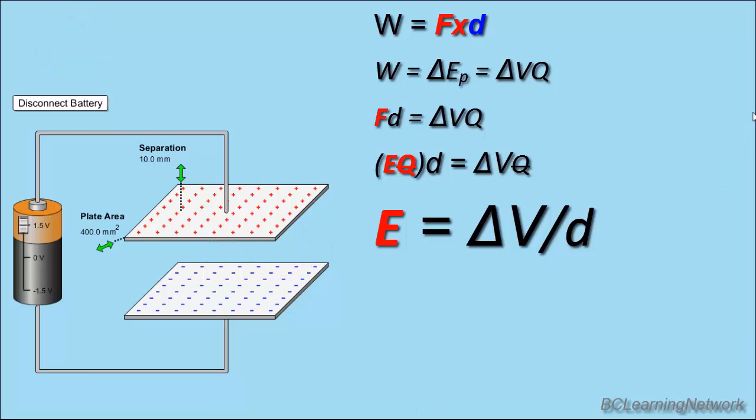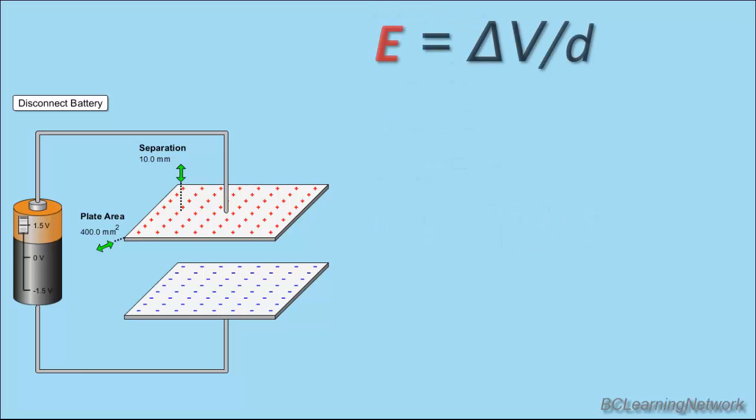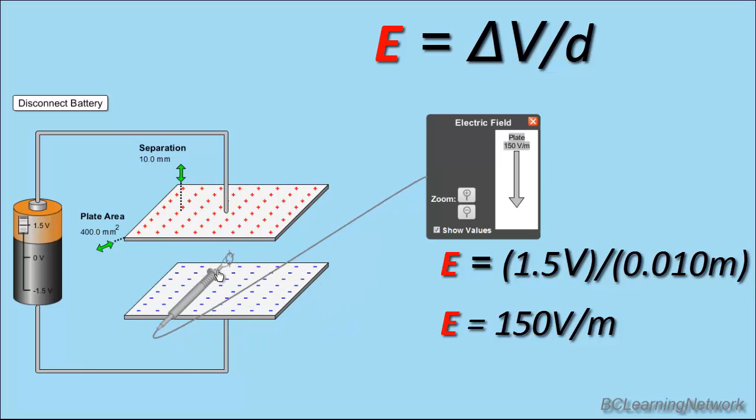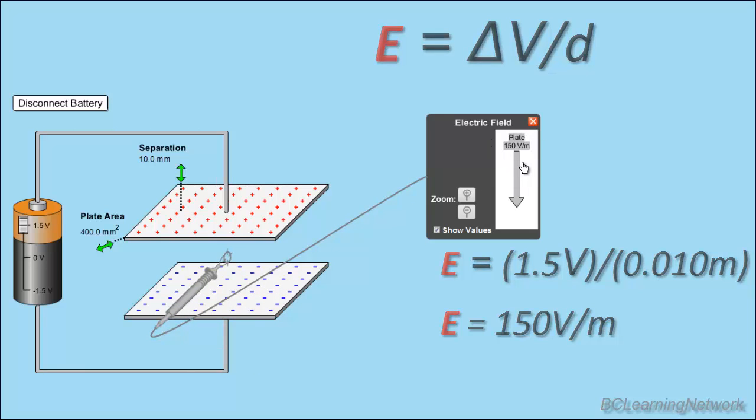Let's quickly check our equation with our simulation. If I grab my electric field detector, right now it's reading zero, and I place it in between the plates, what value would we expect? Well, the electric field is change in voltage, which is 1.5 volts from top to bottom, divided by separation. Now, the separation should be in meters, so it's 10 millimeters, which is 0.01 meters. 1.5 divided by 0.01 gives us 150 volts per meter, which is what our simulation is telling us.